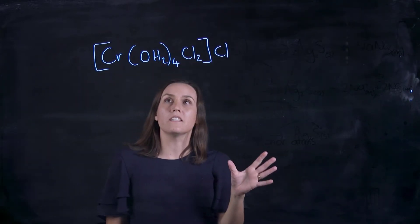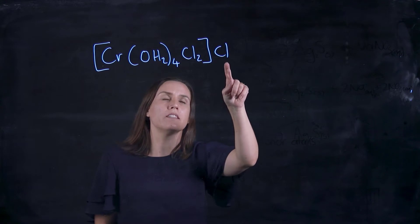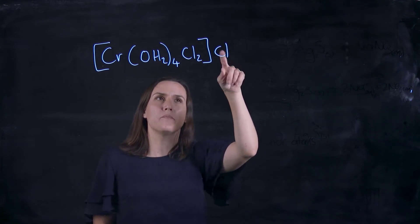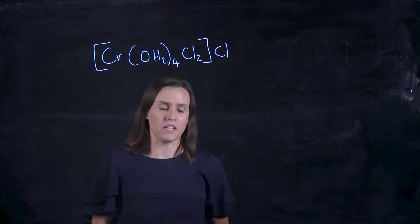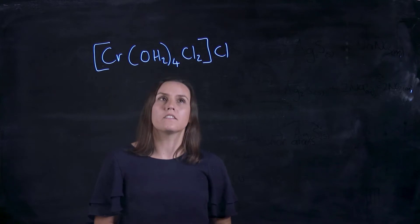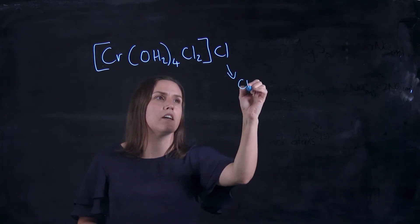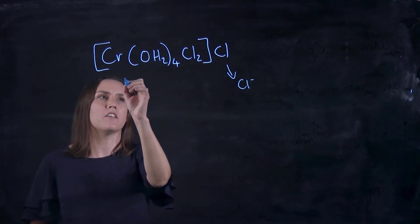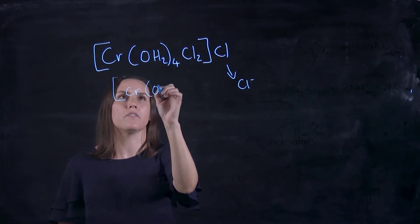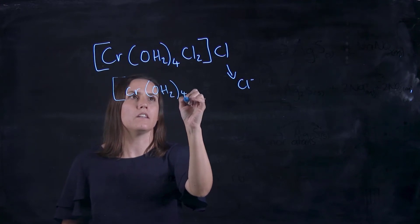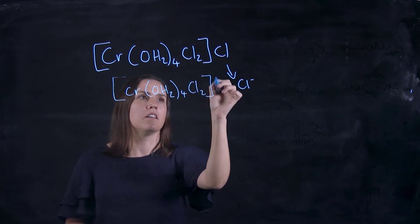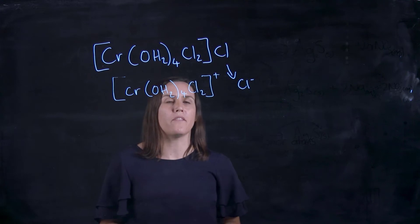Okay, so this is another example here. So we've got a Cl that's the counter ion on this coordination complex. So if we split them up here, we will get a Cl-. And so this whole complex here would have a positive that we need to balance out the minus that we have on the chloride.